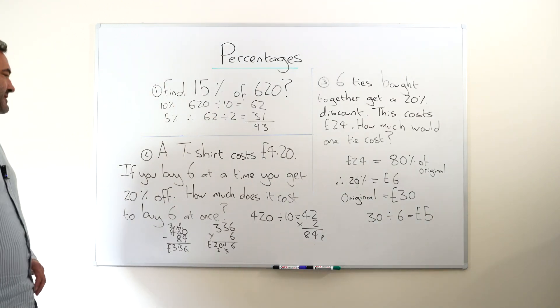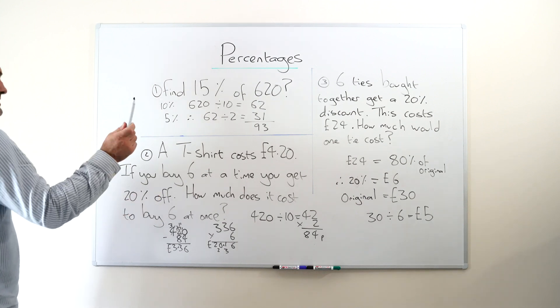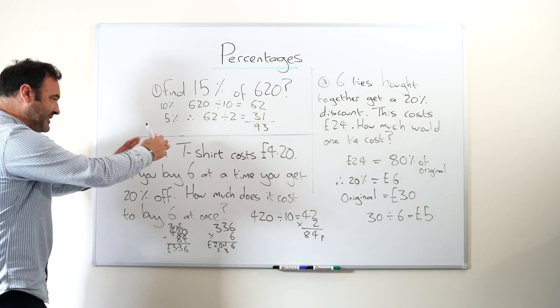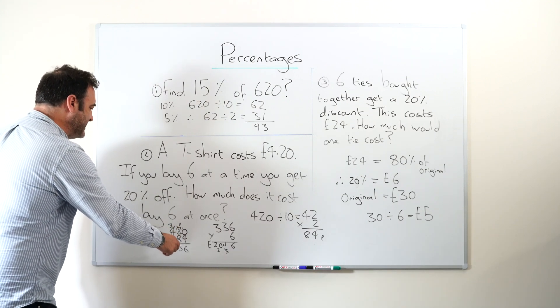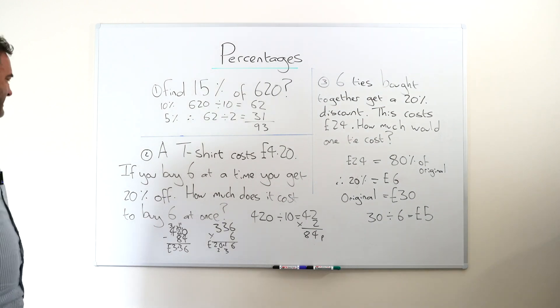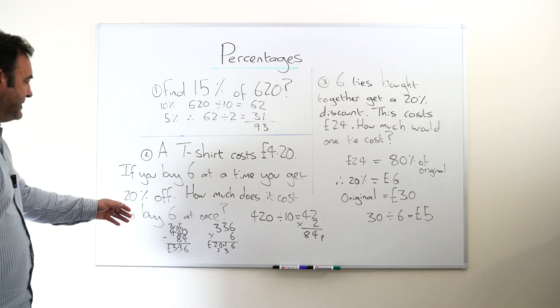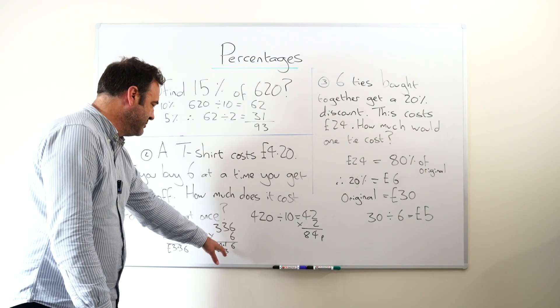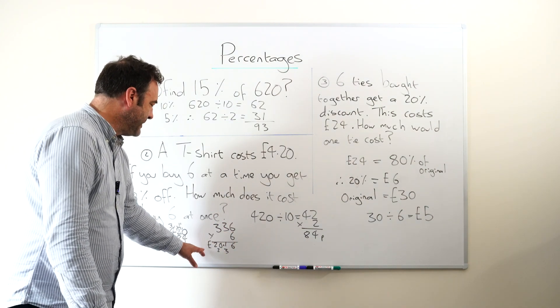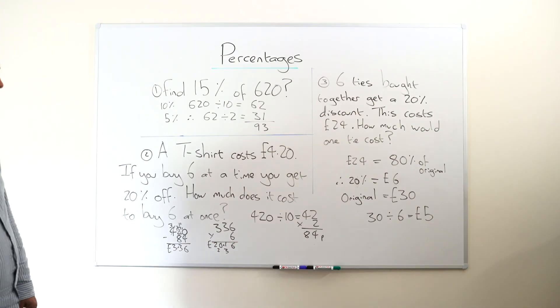Now we know that we get 84 pence discount off each t-shirt. Let's work out what each t-shirt would actually cost in this deal. 420 take 84 is three pounds 36. So if you buy them all at the same time, all six, you actually get them for three pounds 36 each, but only if you buy them at the same time. And therefore it's easy to multiply this by six. Remember, it's best to ignore the decimal and then put it back in at the end. You actually get 20 pounds 16 is the answer. Quite straightforward.